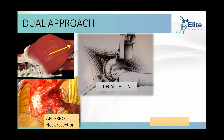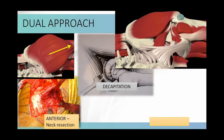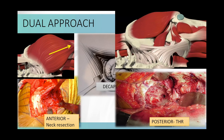Posteriorly, the external rotators — piriformis, short rotators, and quadratus femoris — are taken off. The femur is mobilized anteriorly, exposing the fused acetabular mass. Bony landmarks include the anterior inferior iliac spine and the obturator foramen. In tough cases, I place a 2mm K-wire to identify the hip center. Using gouges and nibblers, bone is removed with a superior spike preserved for cup version and inclination reference. A 360-degree acetabular exposure is achieved. The transverse acetabular ligament (TAL) is a key landmark for determining anteversion, inclination, and true center of rotation.